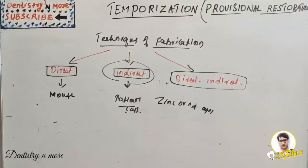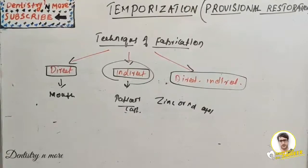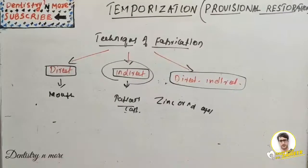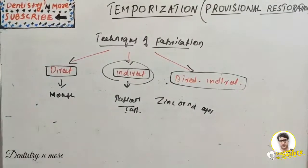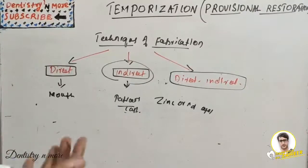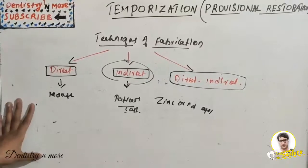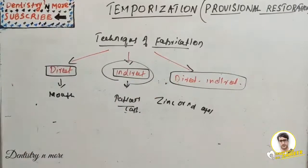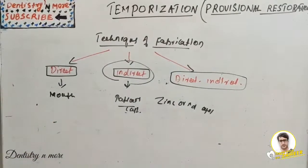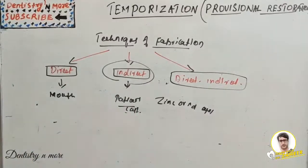That covers temporization or provisional restoration — a very commonly asked short note topic. To answer it: first write the definition, then the classification, then the ideal material requirements, then the three techniques — direct, indirect, and combination — and finally the rationale of temporization. You don't need to write in detail about all techniques; you can use a small flowchart for the steps. It won't usually be asked as a long essay, so a flowchart approach saves time. Hope you understood this topic — I will come up with a new topic in dentistry and more. Thank you.